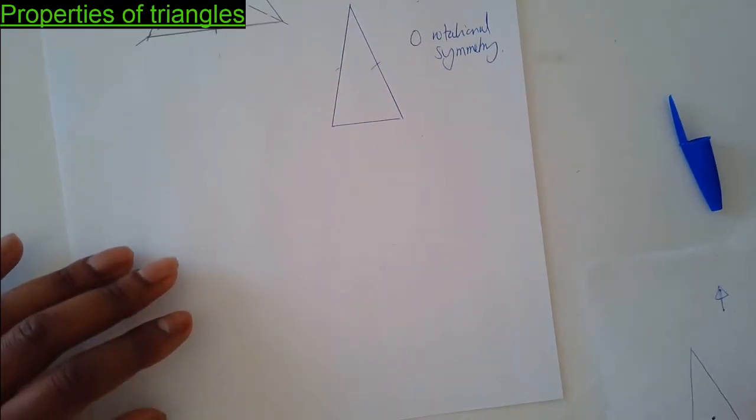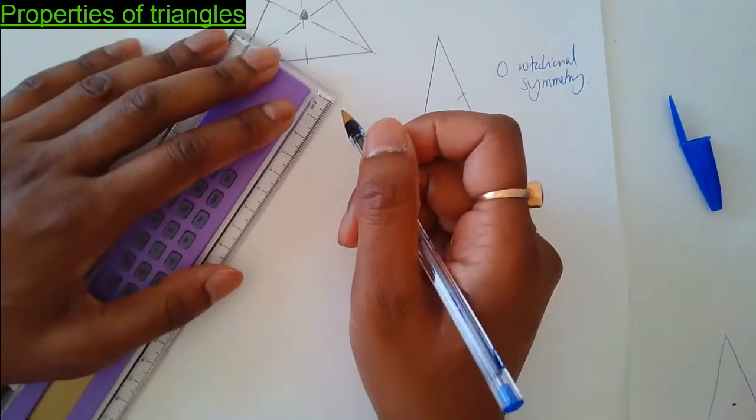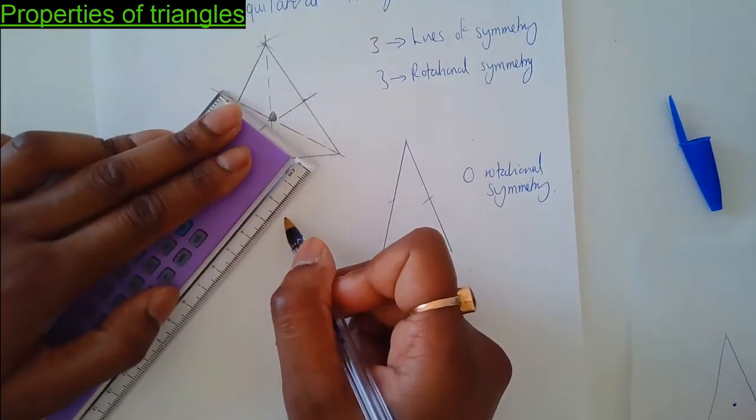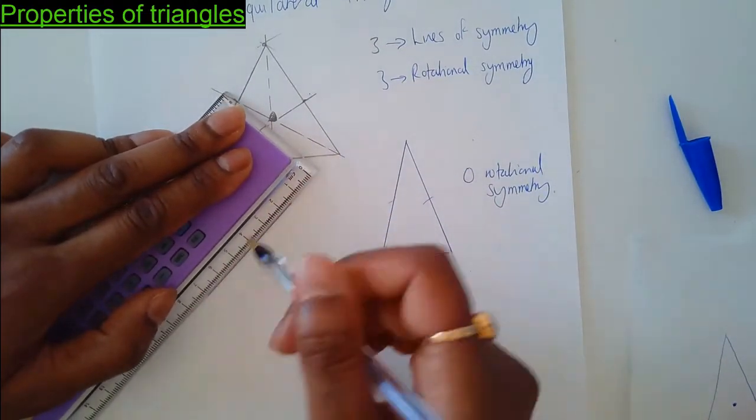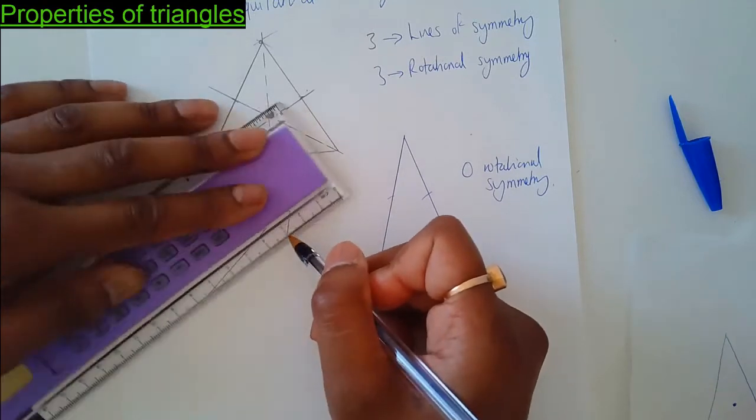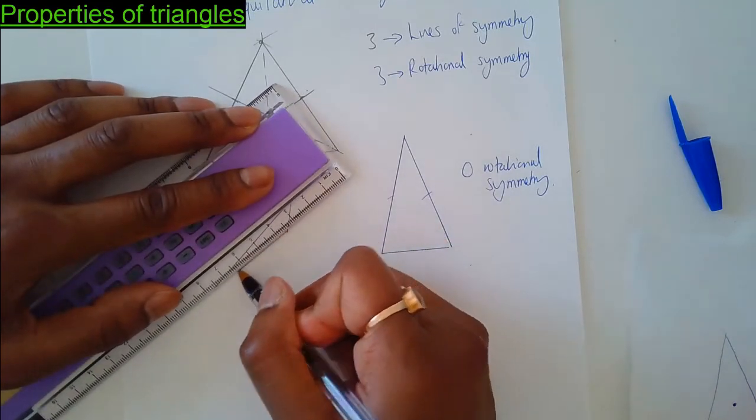You can try all the triangles. Let's go for equilateral. Now we've done equilateral. Let's go for a scalene triangle, where all three sides are different.